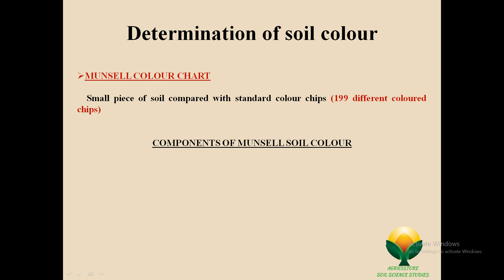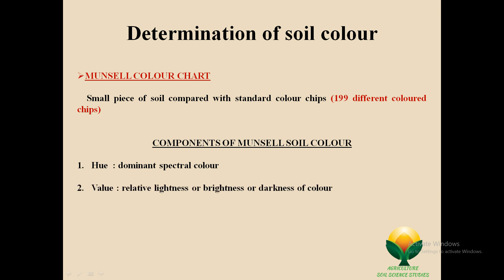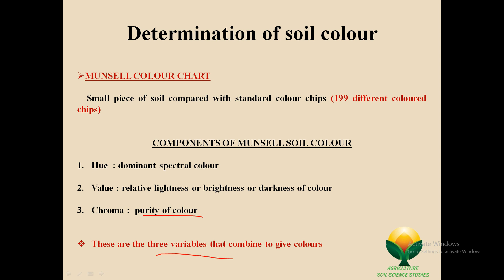There are three components in the Munsell color chart. The first one is hue — the dominant spectral color. The second is value — the relative lightness, brightness, or darkness of color. The third one is chroma — the purity of the color. These three variables combine to give us the soil color.